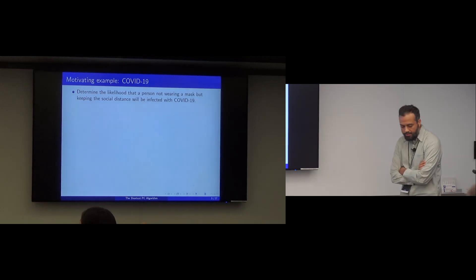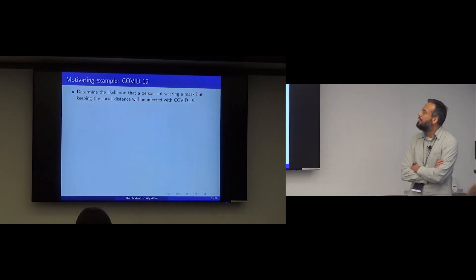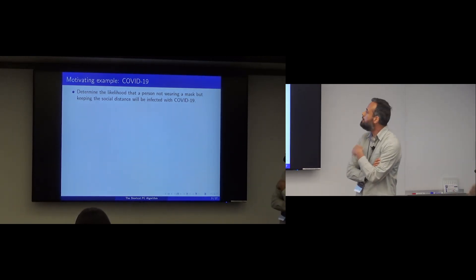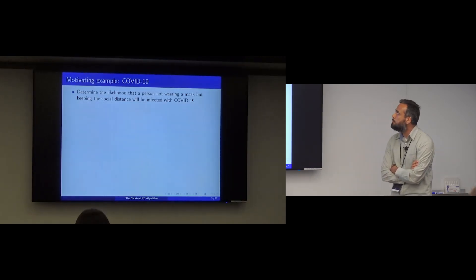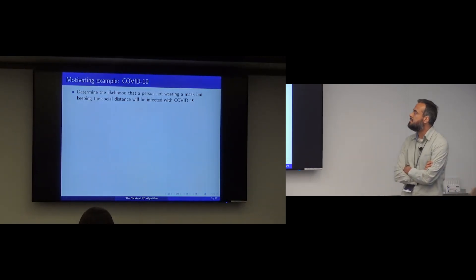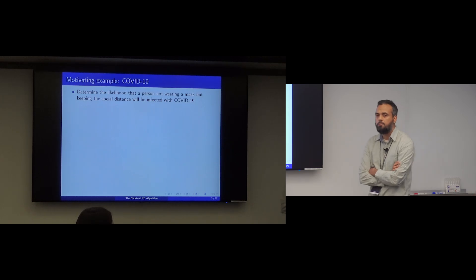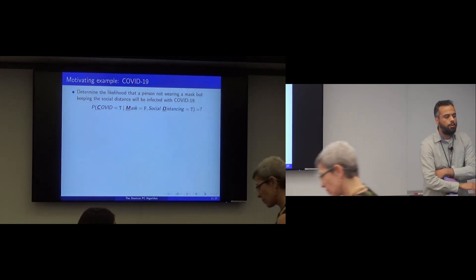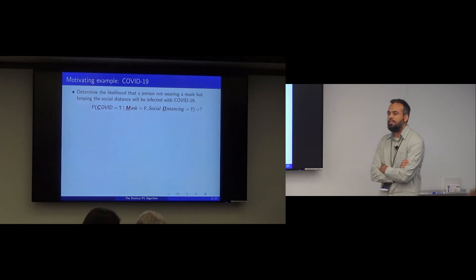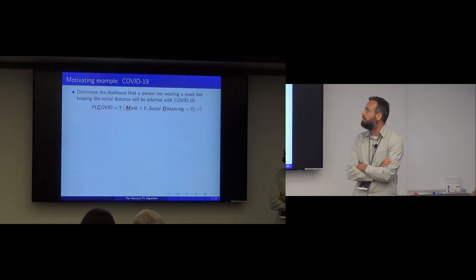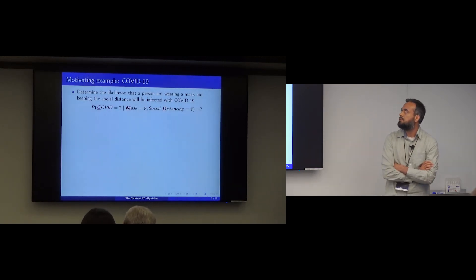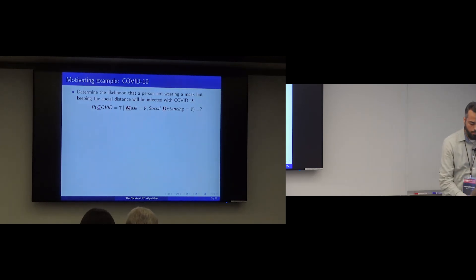Imagine — back to COVID — we all know well how it goes. Imagine you're asked to determine the likelihood that a person not wearing a mask but keeping social distance will be infected with COVID. We can write it down as a simple conditional probability: P(COVID | mask=false, social distancing=true).